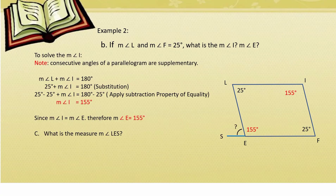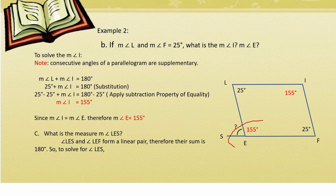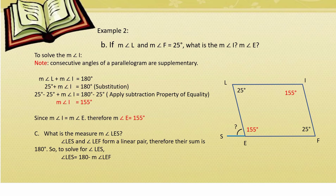Letter C: what is the measure of angle LES? In the figure, angle LES and angle LEF form a linear pair — they are adjacent and form a straight line, so their sum is 180 degrees. To solve for angle LES: angle LES = 180° − measure of angle LEF = 180 − 155 = 25 degrees.